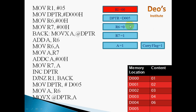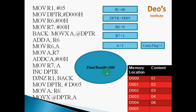Now we are getting the final result in R6 and R7 registers. R6 contains the final result and R7 contains the carry. So our final result is 10 hex, where 0 is the result in R6 and 1 is the carry in R7.